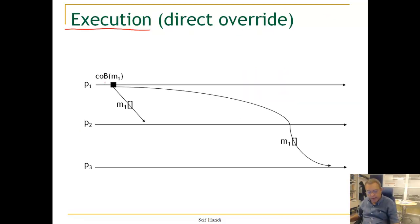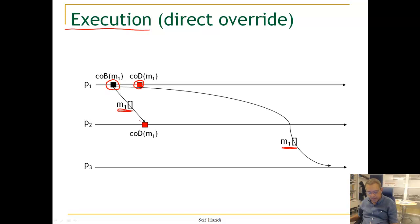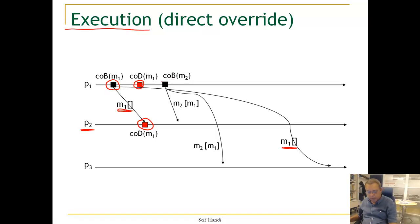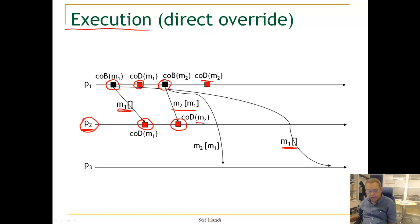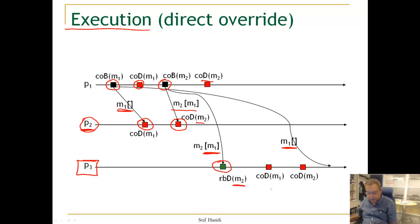In an execution scenario, P1 does a causal broadcast carrying an empty past list, then causally delivers the message M. P2 also delivers M1 with no preceding messages. Then P1 causally broadcasts another message M2, which carries M1 in its past. M2 is causally delivered at both P1 and P2. Because P2 has already delivered M1, M2 is immediately delivered. At P3, when it reliably delivers M2, it checks the past list, first delivers M1 and then M2, since it had not delivered M1 before.